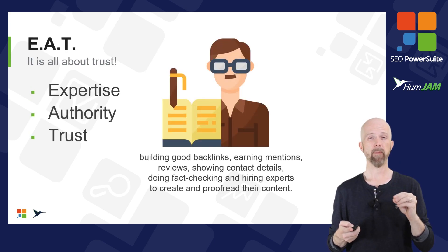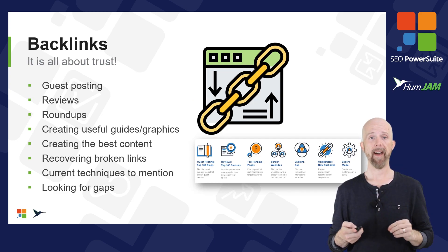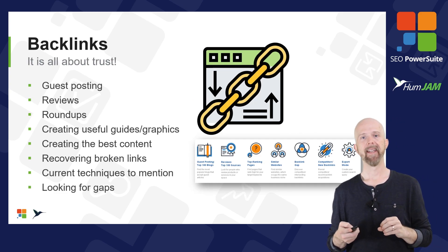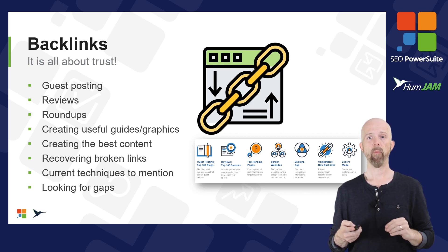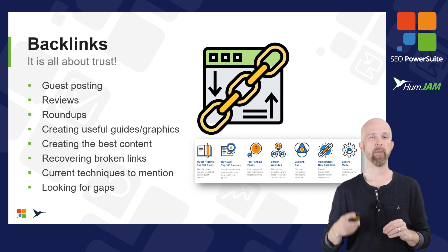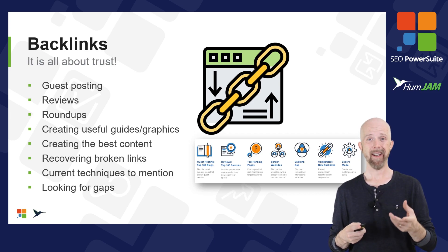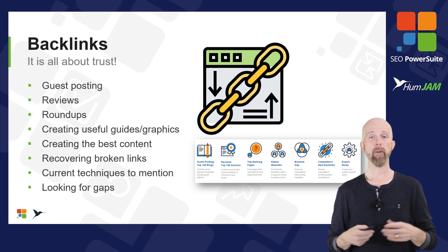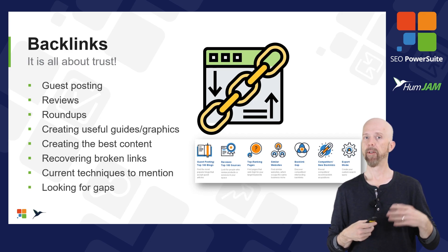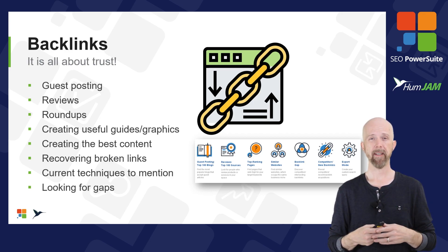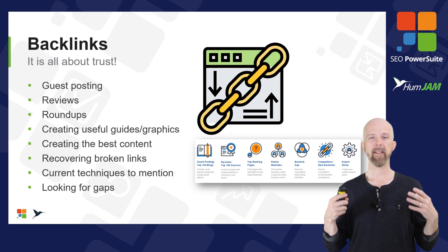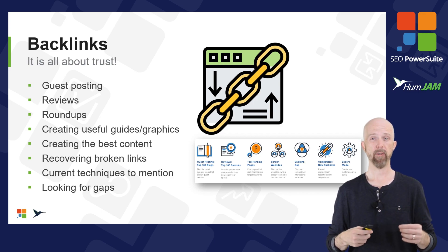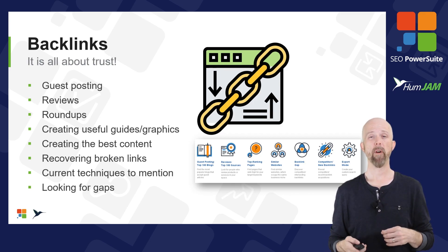EAT is based on expertise, authority, and trust. Let's talk about backlinks — it's all about getting that trust. Using a really cool tool by SEO Power Suite, we can do guest posting, which is a great way to get links. Doing reviews, roundups, creative and useful graphics is another great way to get links. Creating the best content and looking for any gaps that your competitors aren't getting links for — that you could be getting — is what you're looking for.